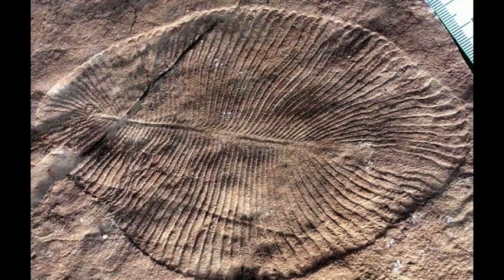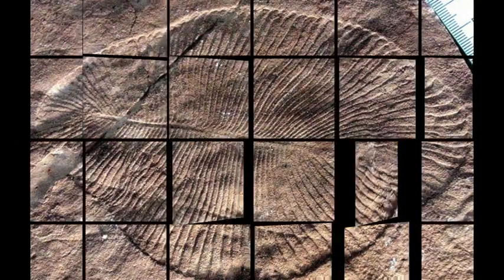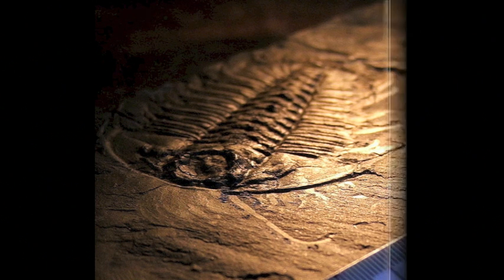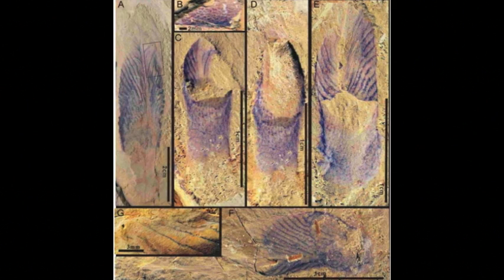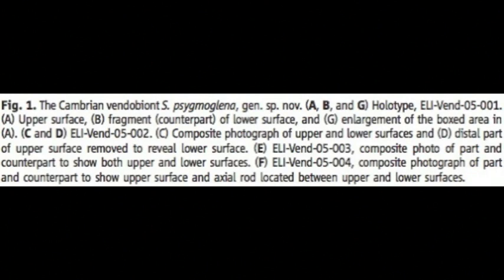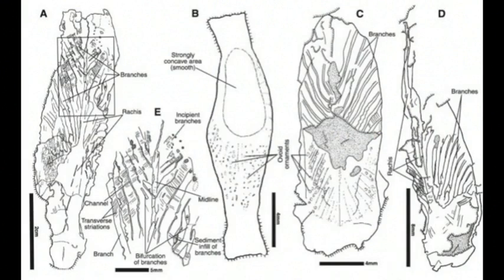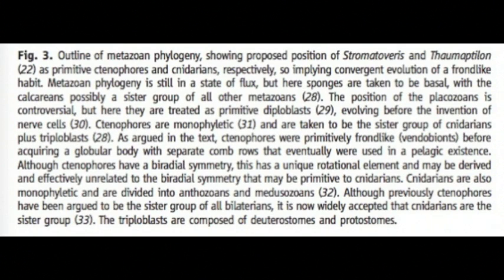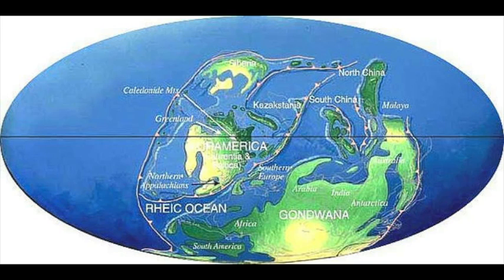And we have arrived in the Cambrian Explosion, where life begins to seriously diversify and all major present phyla emerge. These fossils show the kind of complexity of organisms coming into this era. Note the closely spaced branches that were probably ciliated to move the organism around. This figure shows the phylogeny of the species. However, these remain highly controversial due to a lack of evidence being collected as of yet.